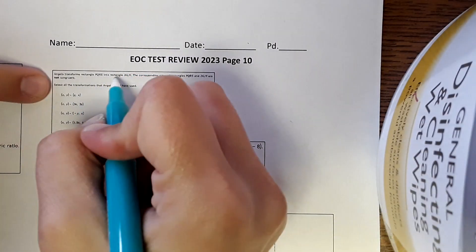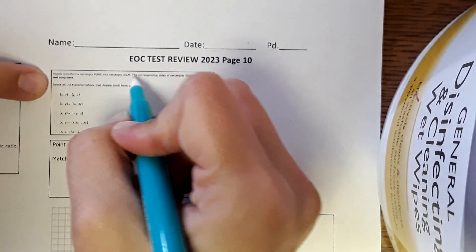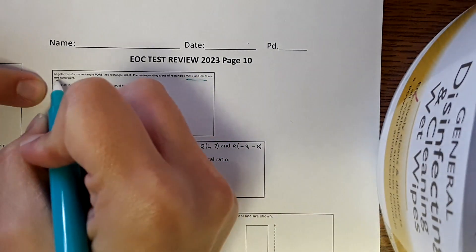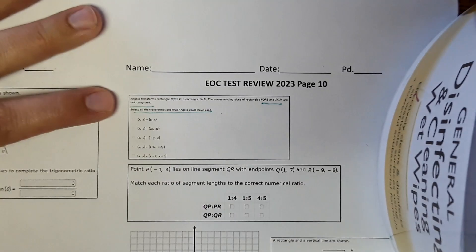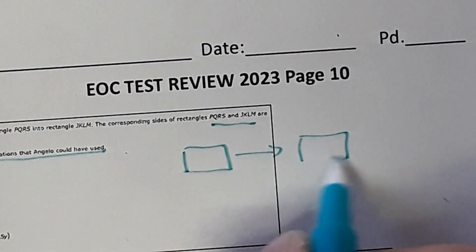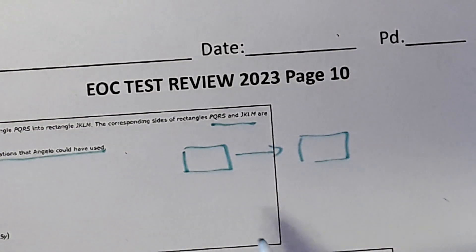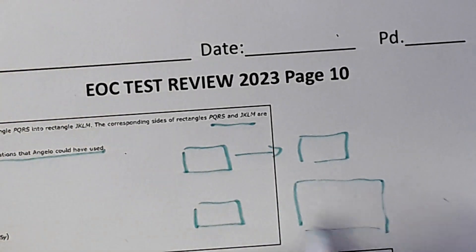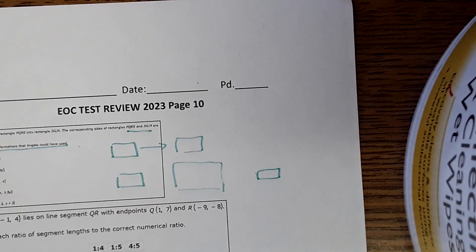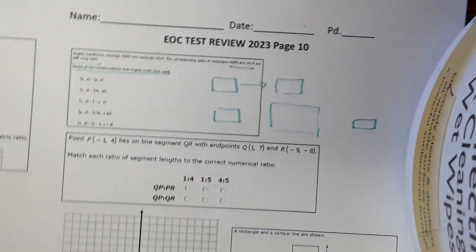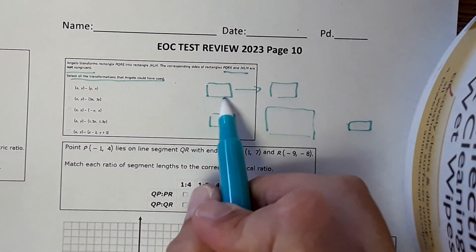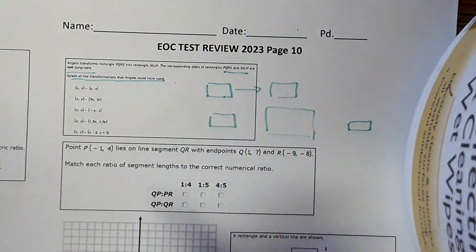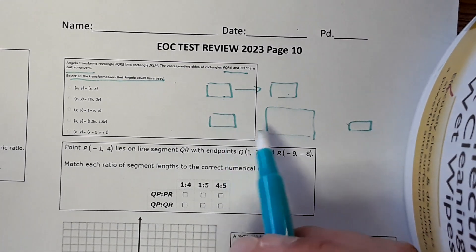Here it says, Angela transforms rectangle PQRS into rectangle JKLM. The corresponding sides of rectangle PQRS and JKLM are not congruent. Select all transformations that he could have used. Okay, so he's saying that he transformed it. A lot of times with transformations, you're just taking like a rectangle and moving it into a new location. And so, therefore, all the dimensions would be the same. But in a specific type of transformation called a dilation, which you should be familiar with, the shape grows or it might shrink, and that would cause the dimensions to be different.